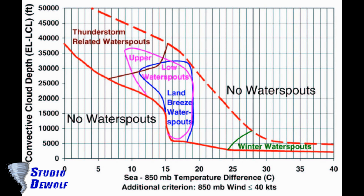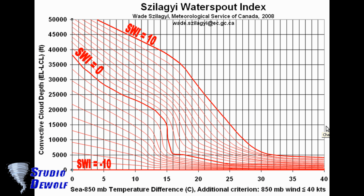There is an empirical technique to forecast waterspouts — the Jilangi waterspout nomogram. A zone within the red lines is likely to produce a waterspout, providing the wind speed is below 40 knots. To quantify the likelihood of waterspout occurrences, the Jilangi Waterspout Index (SWI) was developed. The SWI is a stability index derived directly from the waterspout nomogram. Its values range from minus 10 to plus 10, and waterspouts are likely to occur when the SWI is greater than zero.